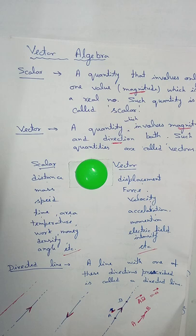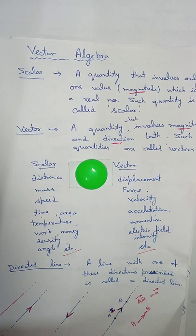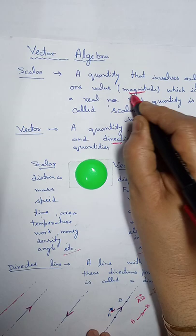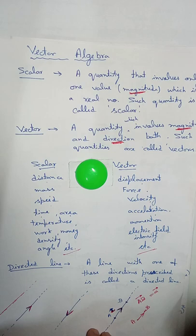Hello friends, today I am going to teach you the basic concept of the vector algebra chapter. In this chapter, first we have to understand what is a scalar and what is a vector. One thing you have to set in your mind: scalar has only magnitude, and vector has magnitude and direction both.